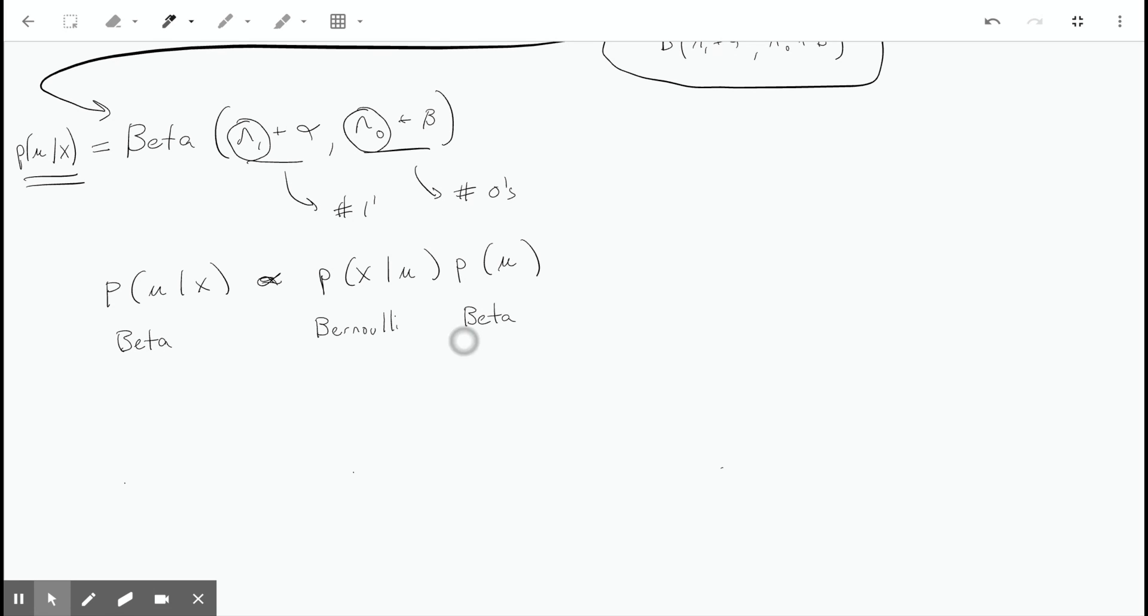The fact that we start with a prior and end up with the same distribution in the posterior is called conjugacy. We say that the Bernoulli and the beta are conjugates, and that the beta is a conjugate prior with respect to the Bernoulli likelihood, because the beta is the posterior distribution as well.